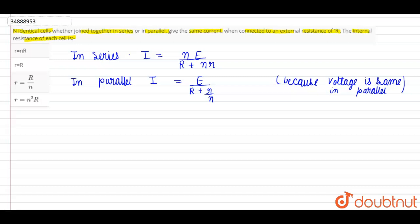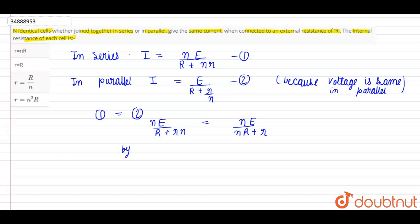When we equate equations 1 and 2: E divided by (R plus r/N) equals N·E divided by (N·r plus R). By solving, we get r equals R. So the answer is option B.